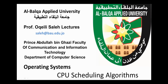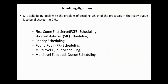Hello everyone. Today we start discussion of CPU scheduling algorithms. CPU scheduling deals with the problem of deciding which of the processes in the ready queue is to be allocated the CPU. The most common known algorithms are first-come-first-served, shortest job first, priority, round-robin, multi-level queue, and multi-level feedback queue scheduling.